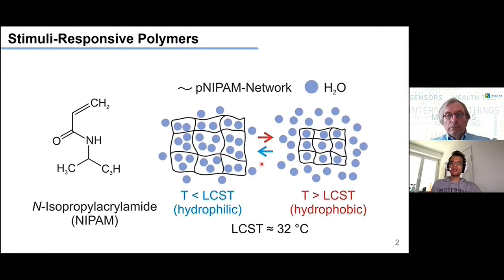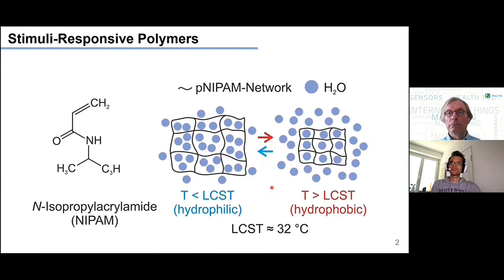There are three nice things about this principle. First, the response is really strong, as I will show on the next slide — you get a quite significant change between the two phases. Second, the process is completely reversible. Third, the transition temperature is around 32 degrees Celsius, which is in a physiological regime and very close to the body temperature of 37 degrees.